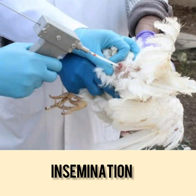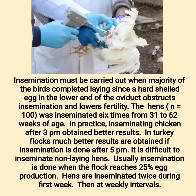Insemination must be carried out when the majority of birds have completed laying, since a hard-shelled egg in the lower end of the oviduct obstructs insemination and lowers fertility. In practice, inseminating chickens after 3 p.m. obtains better results. In turkey flocks, much better results are obtained if insemination is done after 5 p.m. It is difficult to inseminate non-laying hens. Usually insemination is done when the flock reaches 25% egg production. Hens are inseminated twice during the first week, then at weekly intervals.